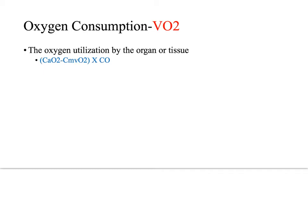Oxygen consumption is also an integral part of oxygen metabolism. It is defined as the oxygen utilized by the organ or tissue, and can be calculated as the CaO2 — your arterial oxygen content — minus your venous oxygen content, multiplied by the patient's cardiac output.